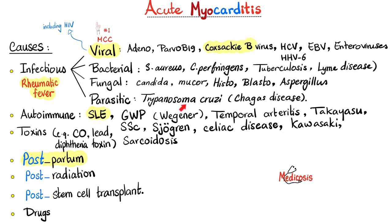Parasites — do not forget Trypanosoma cruzi, or Chagas disease. Rheumatic fever can lead to pancarditis, meaning endocarditis and myocarditis and pericarditis. Autoimmune diseases: lupus, granulomatosis with polyangiitis, temporal or giant cell arteritis, Takayasu arteritis, Kawasaki disease, celiac disease, Sjogren's, and systemic sclerosis. Toxins like carbon monoxide, lead, and diphtheria toxin.